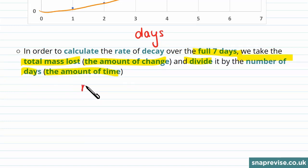Remember, our formula is rate equals change over time. Let's say in this case the total mass loss is 50 grams, and this happens over seven days. That gives the answer 7.14, and as the change is in grams and the time is in days, the units are grams per day.